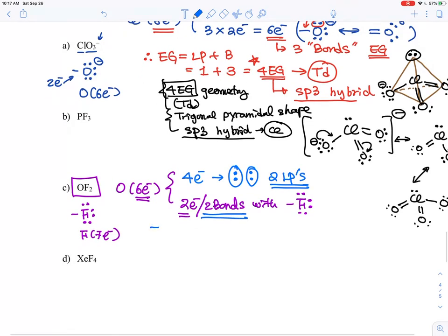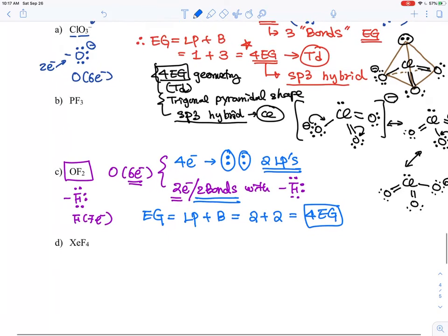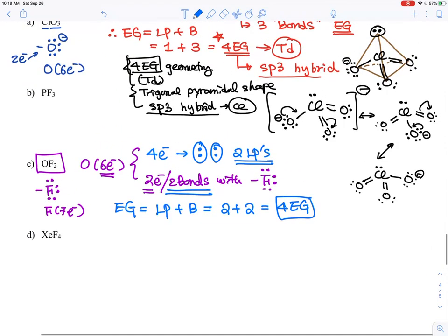Therefore, electron group geometries, which is the lone pair numbers and bond numbers. You got two lone pairs, you got two bonds. Therefore, four electron groups. It is almost automatic when you see the four electron group geometry.